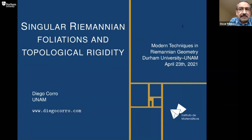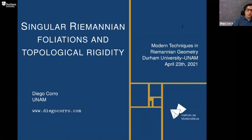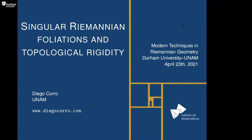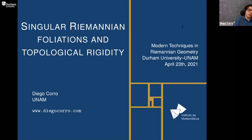Let's start the second part of this session with Diego Coro's talk. He is at the Mathematics Institute at UNAM in the city of Oaxaca, and he will speak about singular Riemannian foliations and topological rigidity. Foliations have been around for a while and they are very useful in three areas of mathematics: geometry, topology, and dynamics. In this talk I'm going to focus on topology and see how the presence of foliations can help us determine the homeomorphism type of the space we're working with.